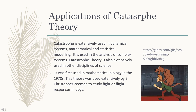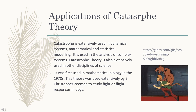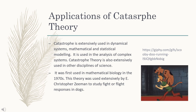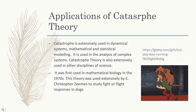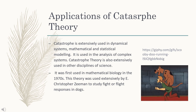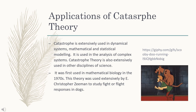It is used in the analysis of complex systems. Catastrophe theory is also extensively used in other disciplines in science. It was first used in mathematical biology in the 1970s. The theory was used extensively by E. Christopher Zeeman to study flight or fight responses in dogs.